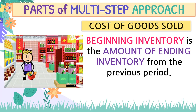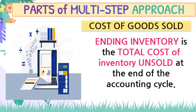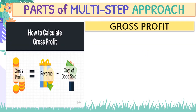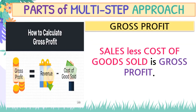Beginning inventory is the amount of ending inventory from the previous period. Ending inventory is the total cost of inventory unsold at the end of the accounting cycle. To calculate gross profit: take net sales — which is sales less contra-revenue such as sales returns and sales discounts — and then subtract cost of goods sold. Revenue minus cost of goods sold equals gross profit.